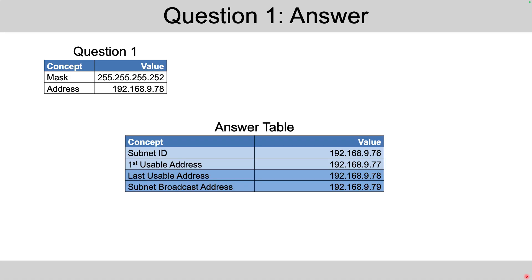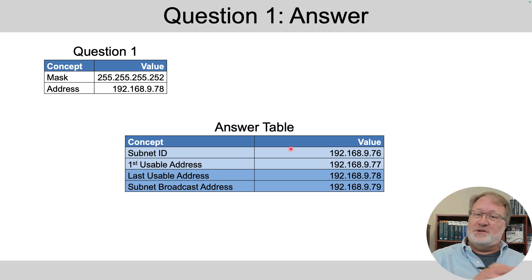Of course, let's start with question one. Here are the answers. All the answers begin with 192.168.9. Of course, we're subnetting a class C network, so all those octets are the same.